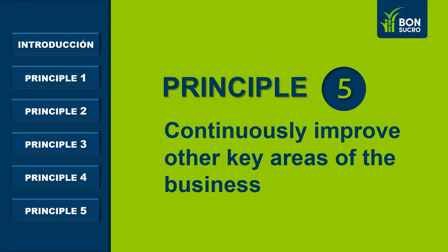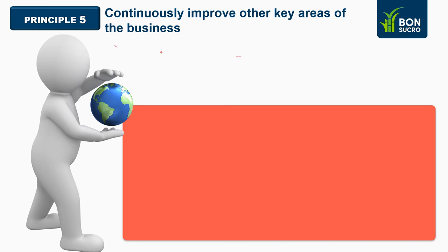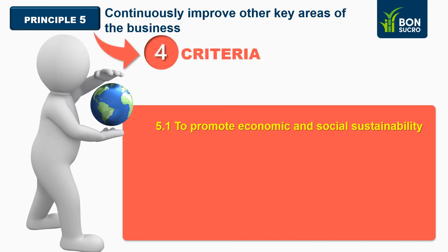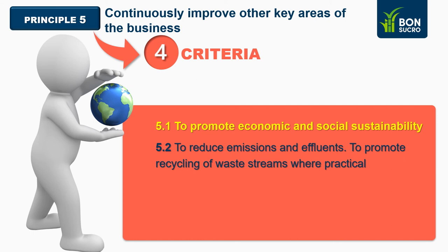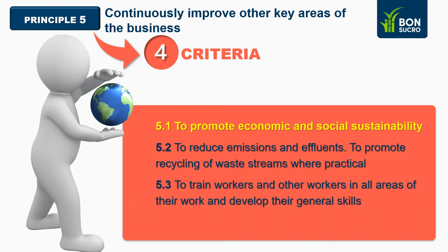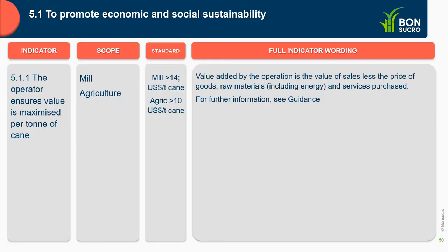We continue now with Principle 5: Continuously Improve Other Key Areas of the Business. This last principle has four criteria: 5.1 to promote economic and social sustainability; 5.2 to reduce emissions and effluents and promote recycling of waste streams where practical; 5.3 to train workers in all areas of their work and develop their general skills; and 5.4 continuous improvement of workers' welfare.